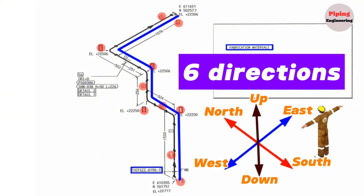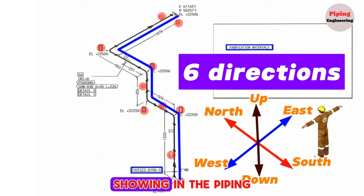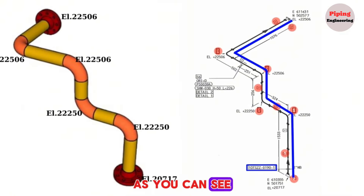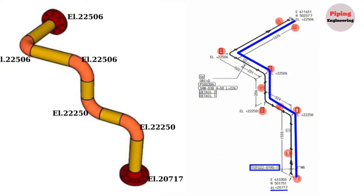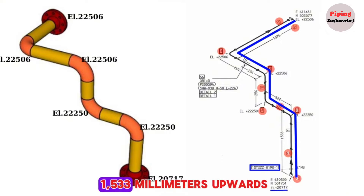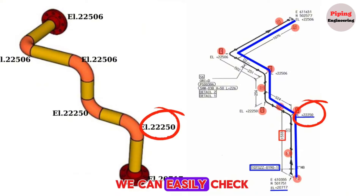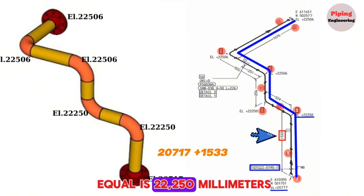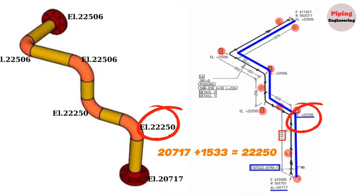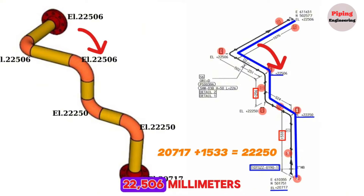Reading the piping isometric drawing has been successfully completed. Now let's learn about the elevations shown in the piping isometric drawing. The elevation of the starting point of the pipeline is 20,717 millimeters. After the pipeline rose 1533 millimeters upwards, the elevation became 22,250 millimeters. Then the pipeline goes up a further 256 millimeters, and the elevation of this point is shown as 22,506 millimeters.